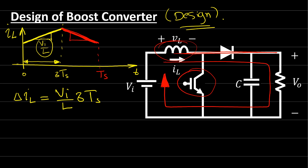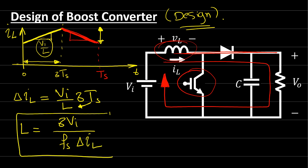To find the value of the inductor from the ripple ΔI_L, we get L = (Δ × V_input) / (f_s × ΔI_L), where f_s is the switching frequency. At a specific ripple, if we know the duty cycle, input voltage, switching frequency, and the maximum ripple we want, we can easily find the value of the inductor.